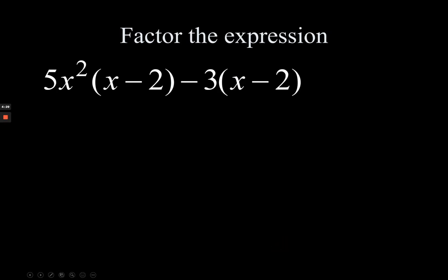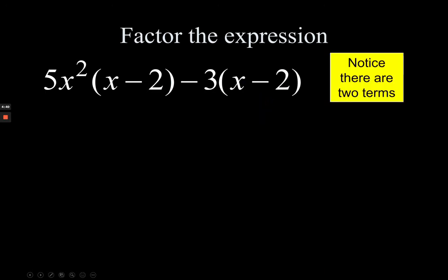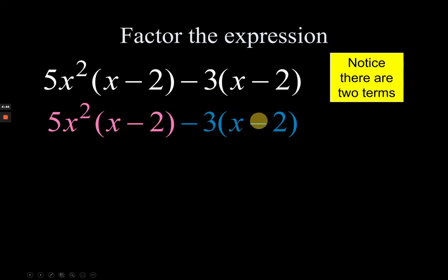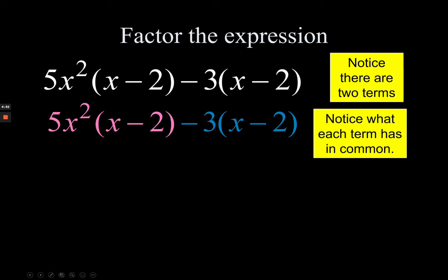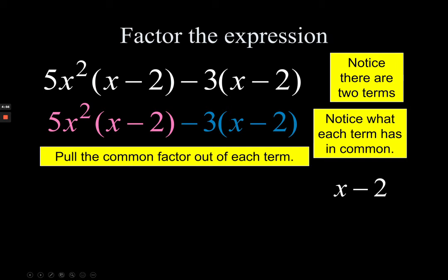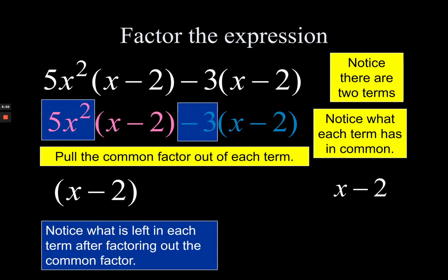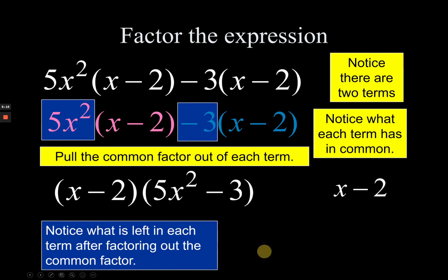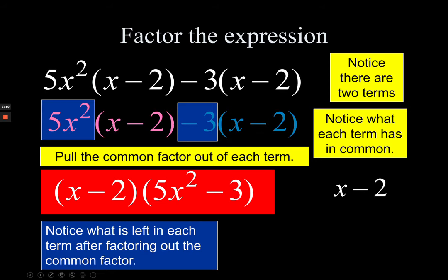Let's try another example. This is an easy category since there are obviously common factors. Notice there are two terms — this is the first term and this is the second. Each term has the common factor (x - 2). Pull out the common factor (x - 2), and the non-common parts — 5x and -3 — are left in a separate parenthesis. That's how common factoring works here.